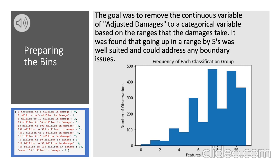Before using the k-nearest neighbors algorithm, we had to create bins for our continuous variable, adjusted damages, converting it into a categorical variable for classification. We found it best suited to use a range of fifths, to address any boundary issues and avoid extraordinary observations that decrease prediction accuracy. As you can see from the histogram, this is a very top-heavy classification in which most observations have a high price associated with the damage. The bins go from $1,000 to $1 million, $1 million to $5 million, and so on, all the way to over $100 billion in damage.